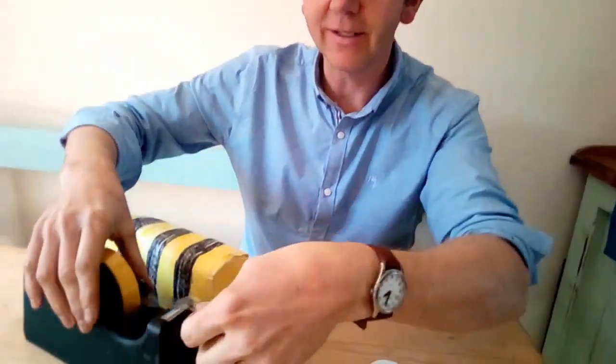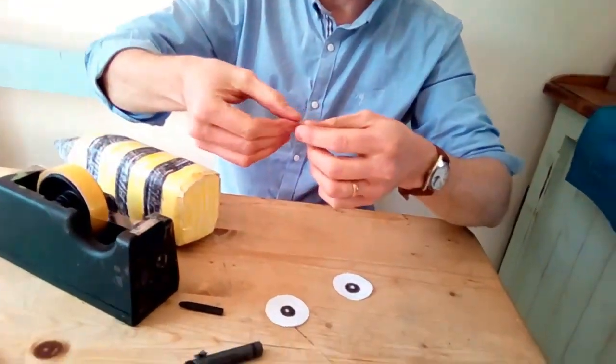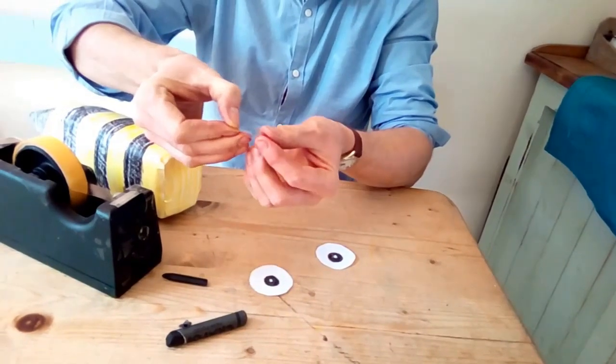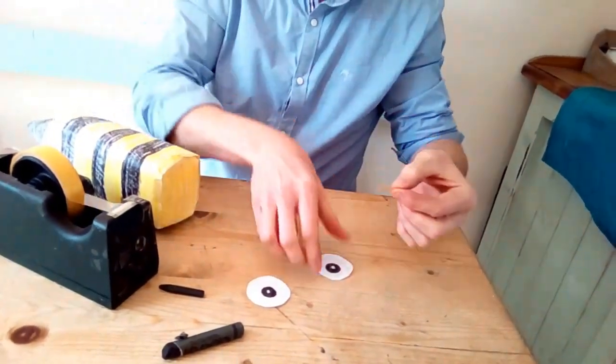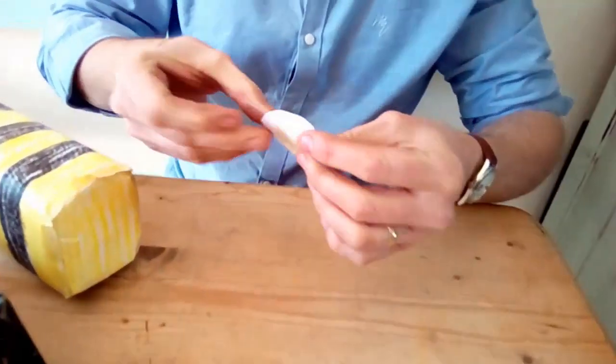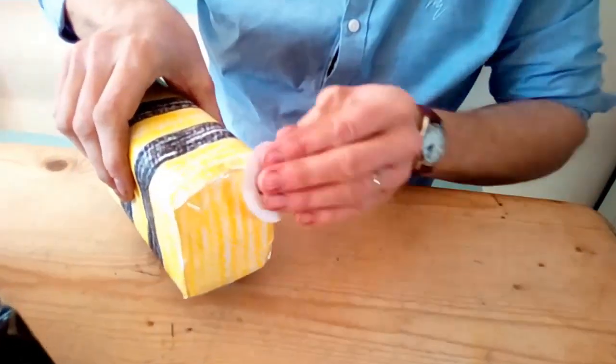Now we can stick the eyes on. I'm going to take a little bit of cello tape like this and roll it up back to back like that. Stick it on the back of the eye. And here we go.